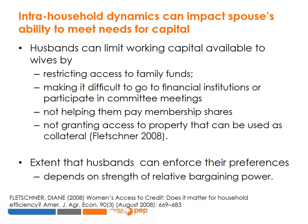This example from a gender perspective shows how intra-household dynamics can impact a spouse's ability to meet the need for capital. In a 2008 study, Diane Fletchner models intra-household dynamics and women's access to credit. When husbands oppose their wives' participation in income-generating activities, there are several ways in which they can limit wives' access to credit. These include limiting the working capital available to them by restricting their access to family funds, by making it difficult for them to go to financial institutions or participate in committee meetings, by not helping them pay membership shares, or by not granting them access to property that can be used as collateral. Whether and to what extent husbands are able to enforce their preferences depends on the strength of their relative bargaining power.